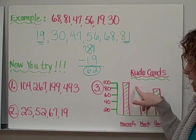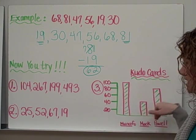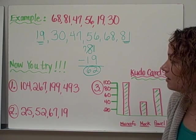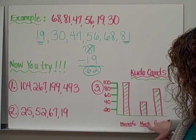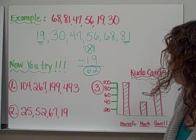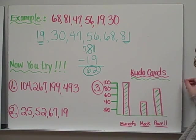So here we have our numbers that are related to our bars. So use this information to help you figure out the range of kudo cards that Mrs. Monofo, Mrs. Mock, and Mrs. Powell's class have earned. Please do this in box 3 of your homework sheet.